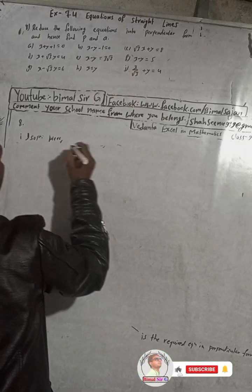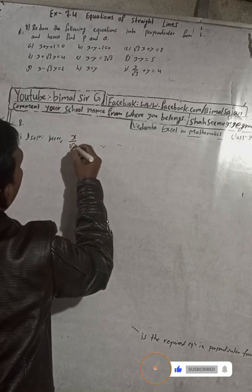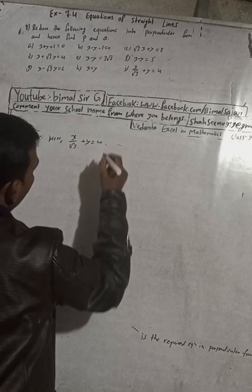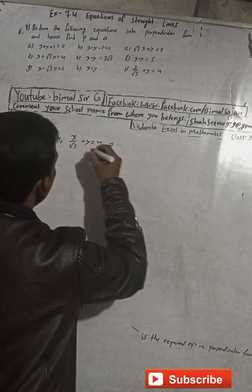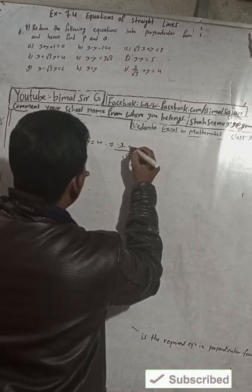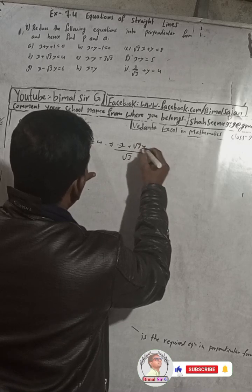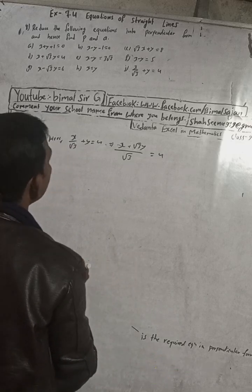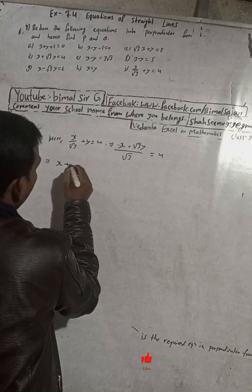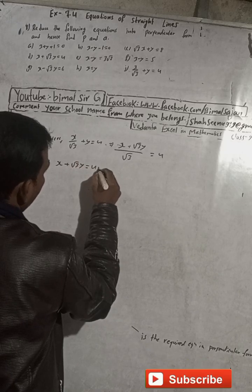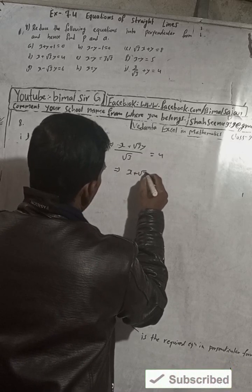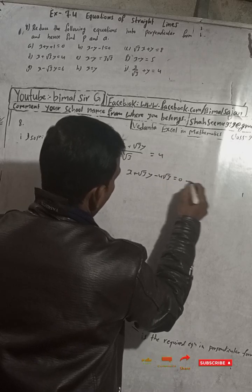The equation is x/√3 + y = 4. This can be rewritten by multiplying through: x + √3y = 4√3, which gives us x + √3y - 4√3 = 0. This is our Equation 1.